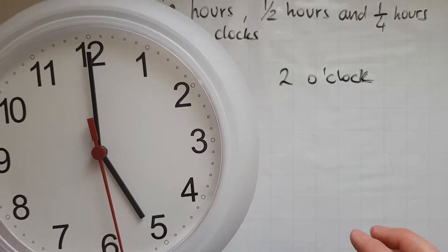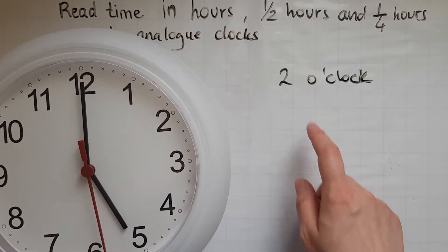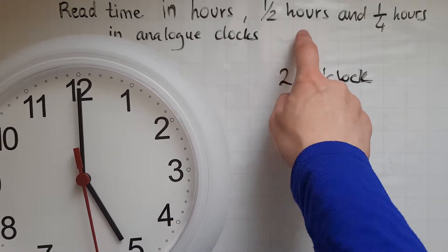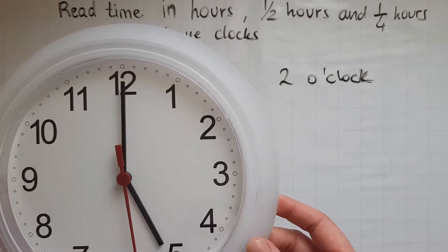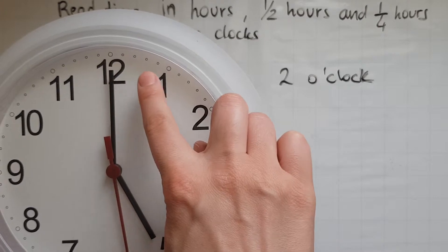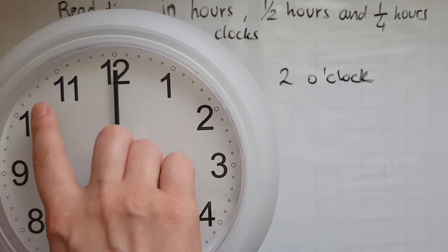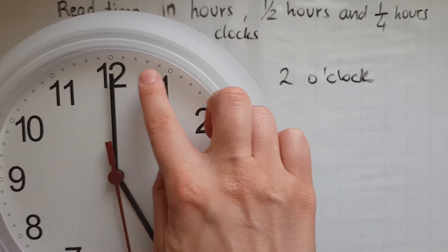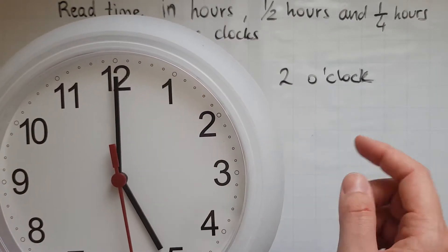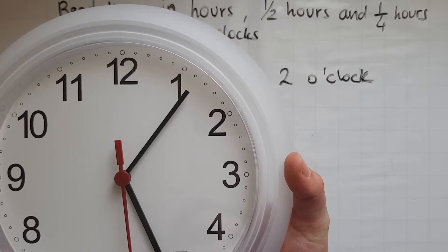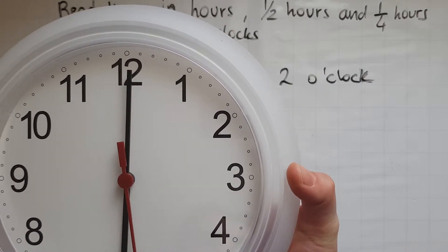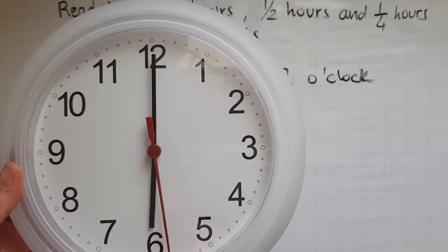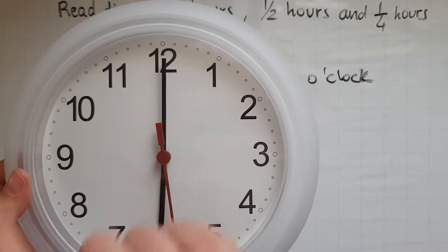So we looked at exact hours — reading time in hours, like two o'clock, three, four, five, or twelve o'clock. Now half hours — what does that mean? When we move the minutes hand a full circle, that means 60 minutes, because there are 60 minutes in one hour. So the hours hand moves from five to six — that is a full circle, which means one hour.